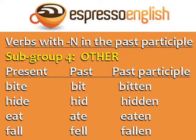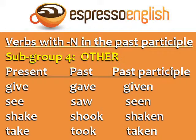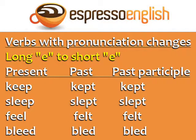Subgroup four — other: these verbs have N in the past participle but don't appear to follow any other pattern. Bite, bit, bitten. Hide, hid, hidden. Eat, ate, eaten. Fall, fell, fallen. Give, gave, given. See, saw, seen. Shake, shook, shaken. Take, took, taken.